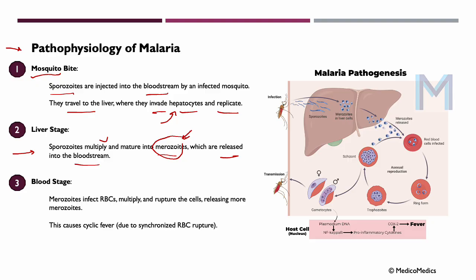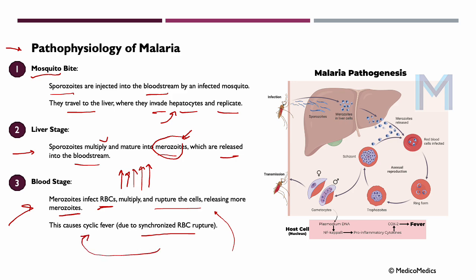Moving along in our bloodstream, these merozoites will infect our red blood cells. While inside the RBCs, they undergo asexual reproduction, leading to an even higher level of merozoites. Eventually, the cell is ruptured and these merozoites are released. When this happens, due to the synchronized rupture of our RBCs, we see cyclic fever.